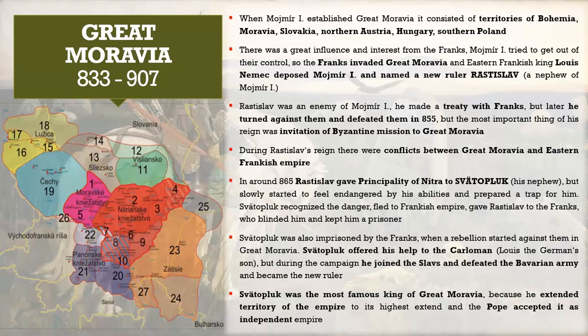The East Frankish Empire was a neighbor country and there was great influence and interest from their side. Mojmír the First tried to get out of their control, so the Franks — specifically Eastern Frankish king Louis the German — invaded Great Moravia and deposed Mojmír the First.